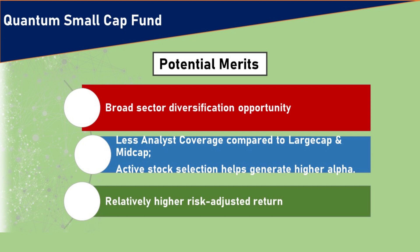Small cap stocks are less covered by analysts and media, so a small cap fund manager can actively select good small cap stocks and generate higher alpha. There are many undervalued small cap stocks where value is yet to be unlocked. The fund manager can identify the potential of small cap stocks before the media uncovers them, giving the potential to generate a higher alpha. This fund has a relatively higher risk-adjusted return potential.